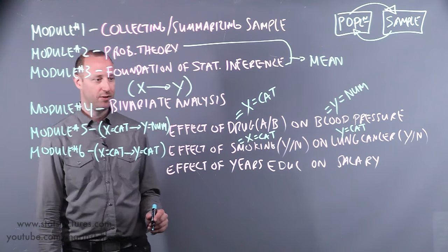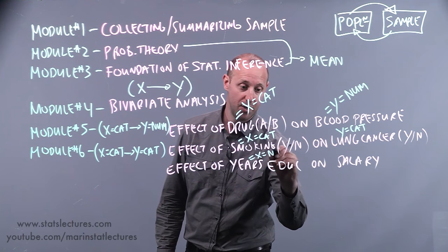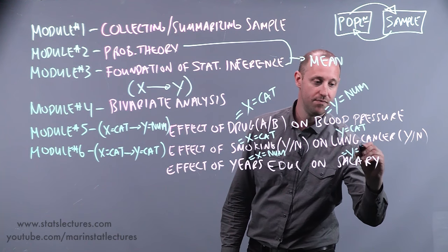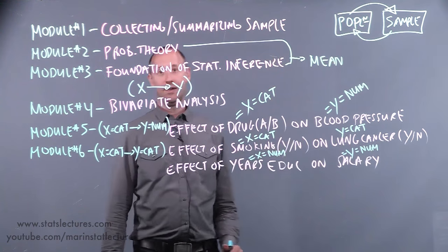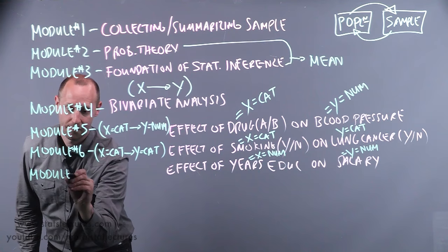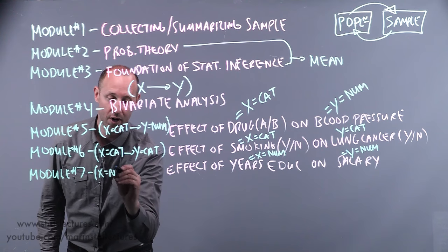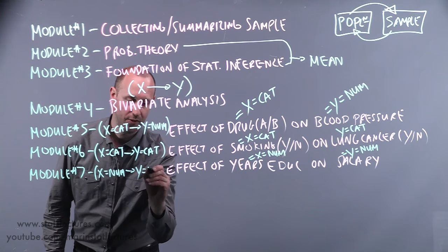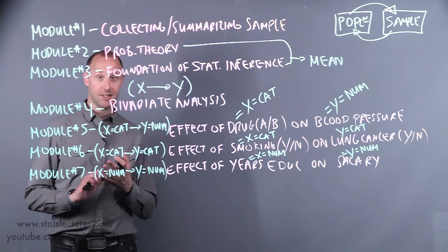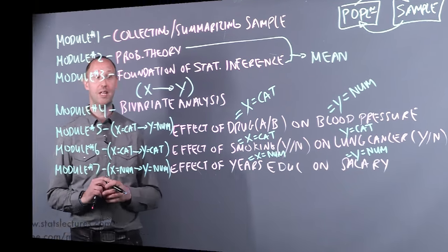In the final example, we're looking at the effect of years of education — a numeric variable — on salary, our numeric Y variable. This is going to be covered in module seven, where we look at the effect of a numeric X variable on a numeric Y variable. In this section we'll discuss things like correlation, simple linear regression, and other related topics.